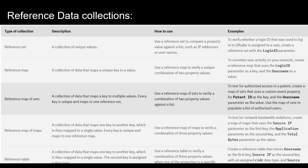When you need to compare a single value or property against a list of values, a reference set is the ideal data collection. Similarly, a reference map is a collection of data that maps a unique key to a unique value. For example, to correlate user activity on your network, you can create a reference map that uses login ID as the key and username as the value — one login ID mapped to one username.